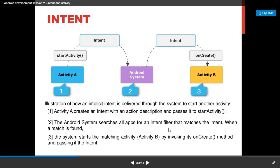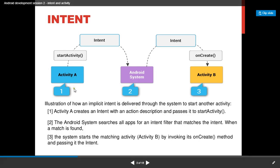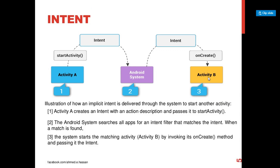Here is a basic example of how implicit intent works. Let's say we have Application 1. Within this application we have Activity A. With this activity we are going to start an intent using start activity. As soon as that intent has been initiated, the Android system will receive the intent and generate another intent, sending it to Activity B of another application, which will then execute a task for you.